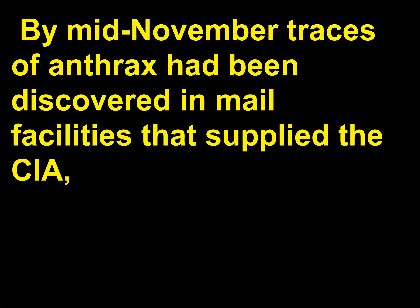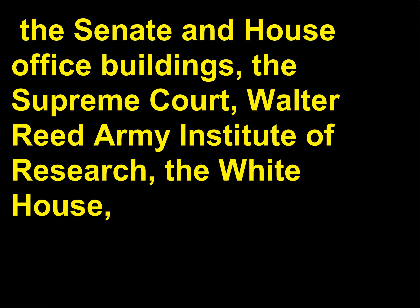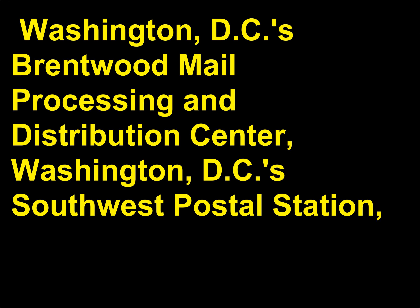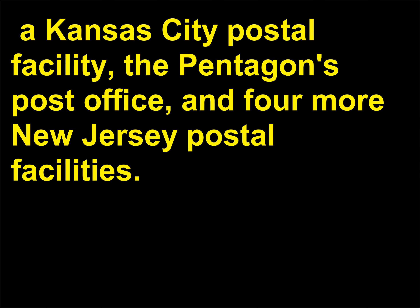By mid-November, traces of anthrax had been discovered in mail facilities that supplied the CIA, the Senate and House office buildings, the Supreme Court, Walter Reed Army Institute of Research, the White House, Washington D.C.'s Brentwood Mail Processing and Distribution Center, Washington D.C.'s Southwest Postal Station, a Kansas City postal facility, the Pentagon's post office, and four more New Jersey postal facilities. Antibiotics were distributed to thousands of workers as a preventive measure.